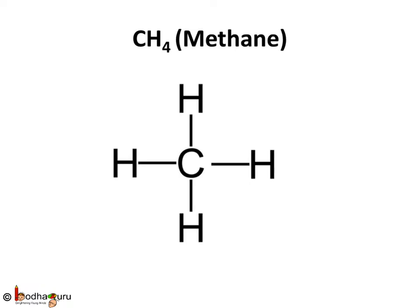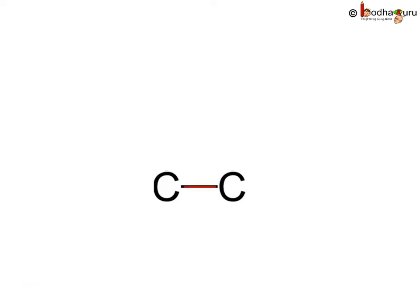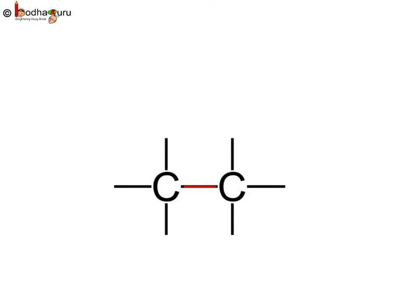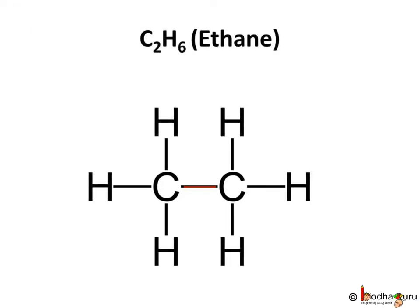How do we arrive at the structural formula for different carbon compounds? Here, 2 carbon atoms are joined with a single covalent bond, indicated by a single line between the 2 carbon atoms. Now, 3 valencies of each carbon atom remain unsatisfied, so each carbon atom can bond with 3 hydrogen atoms to achieve 8 valence electrons. Thus, each carbon atom forms 3 single covalent bonds with 3 hydrogen atoms, and we get the structural formula for ethane, which has a molecular formula of C2H6.